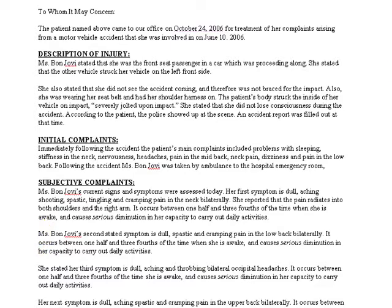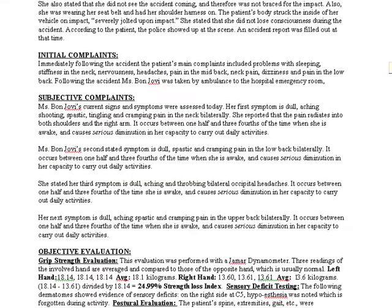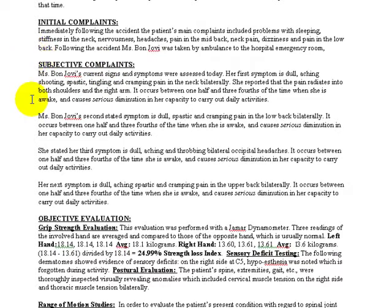Here are the subjective complaints. So here in the office, presently, Ms. Bon Jovi's current signs and symptoms were assessed today. Her first symptom is dull aching, shooting, spastic tingling, and cramping pain in the neck bilaterally. She reported that the pain radiates into both shoulders. It goes on to describe specifically the symptom. Here's the second symptom. Here's the third symptom.